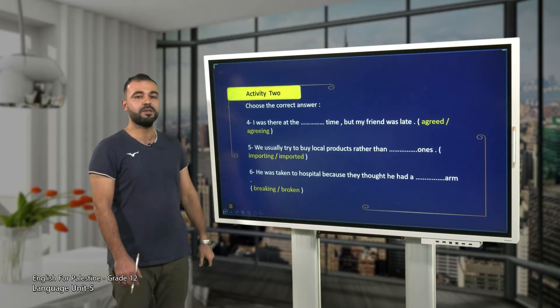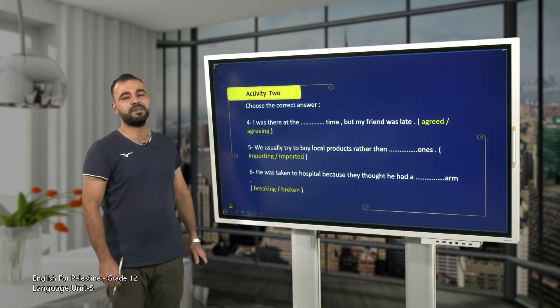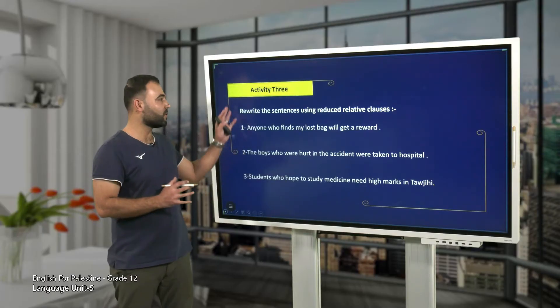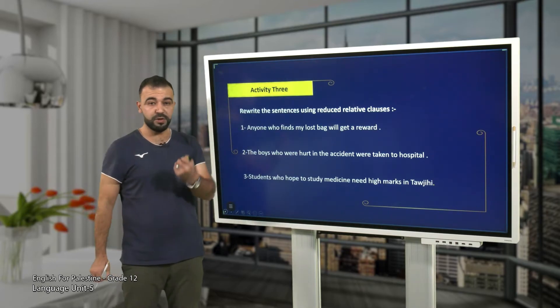Continue with four, five, and six. Well done! Let's check your answers. Number four: I was there at the agreed time, but my friend was late. Number five: we usually try to buy local products rather than imported ones — exactly, imported. Number six: he was taken to hospital because they thought he had a broken arm. Now let's move to activity three: rewrite these sentences using reduced relative clauses.